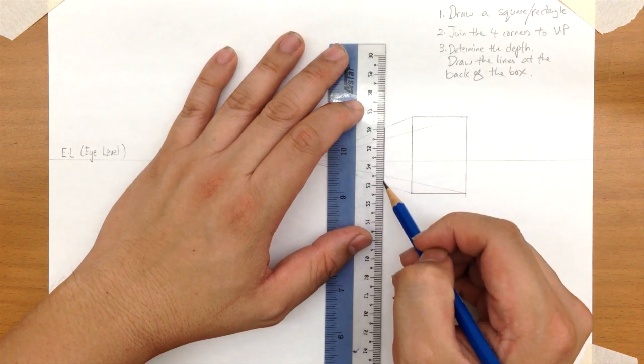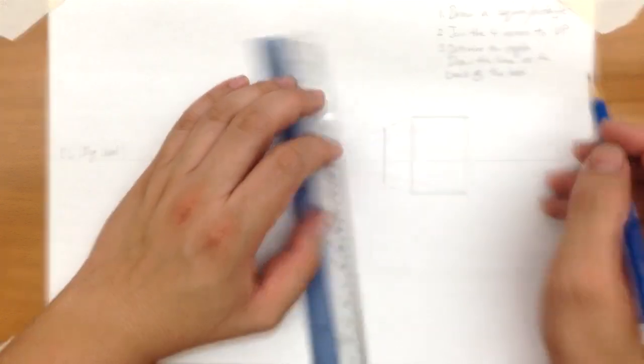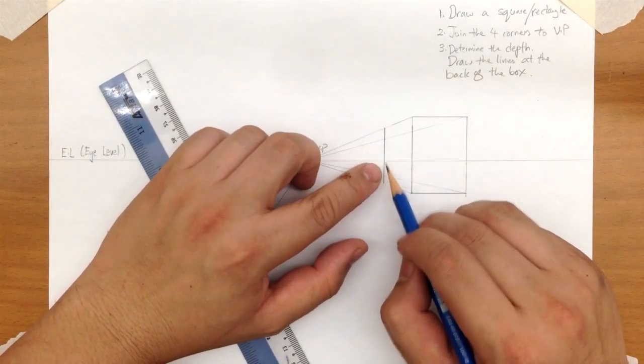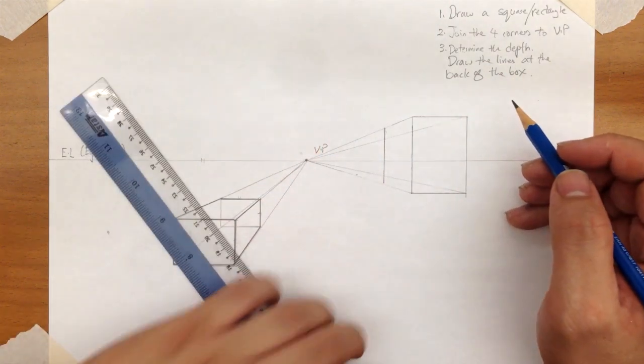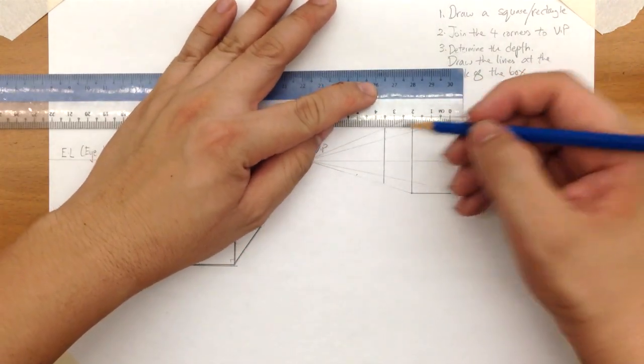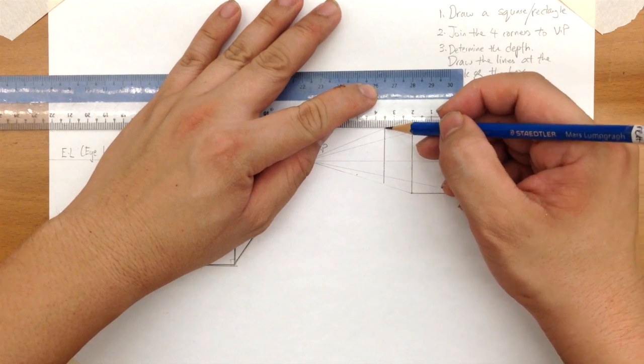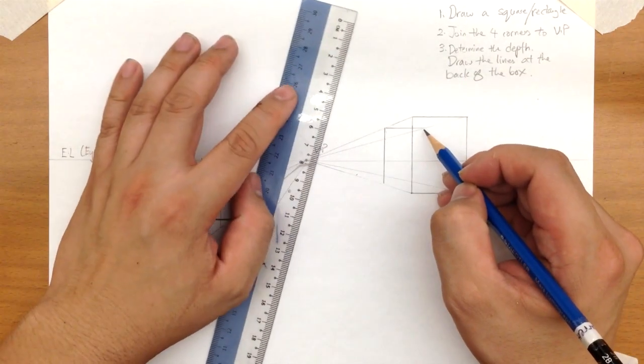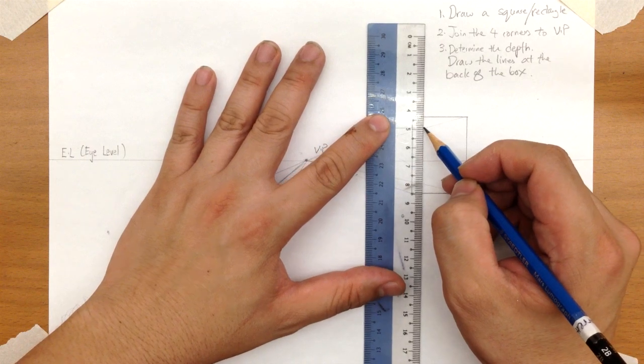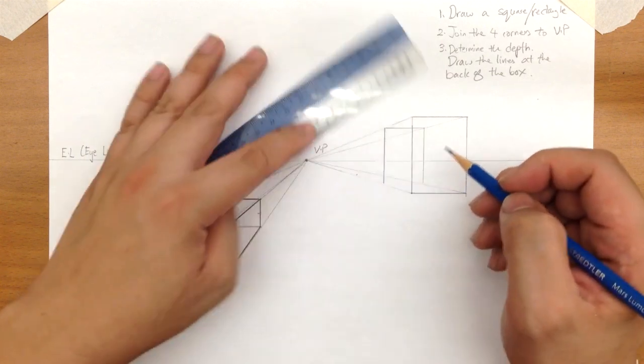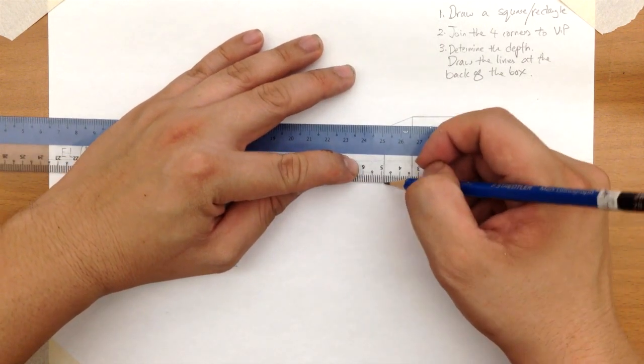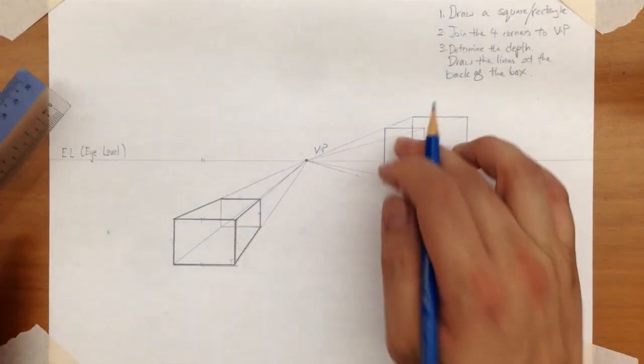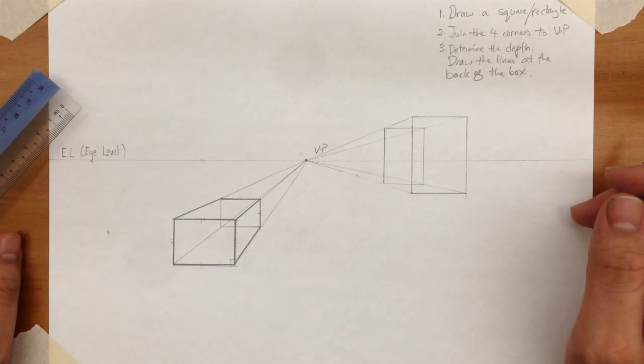I'm going to draw a line down. Okay. This is the depth. And I'm going to finish off by drawing the lines at the back of the box. So from here. Just draw a line across. Hit the back here. And draw a line down. Okay. So this is the back of the box. And yeah.